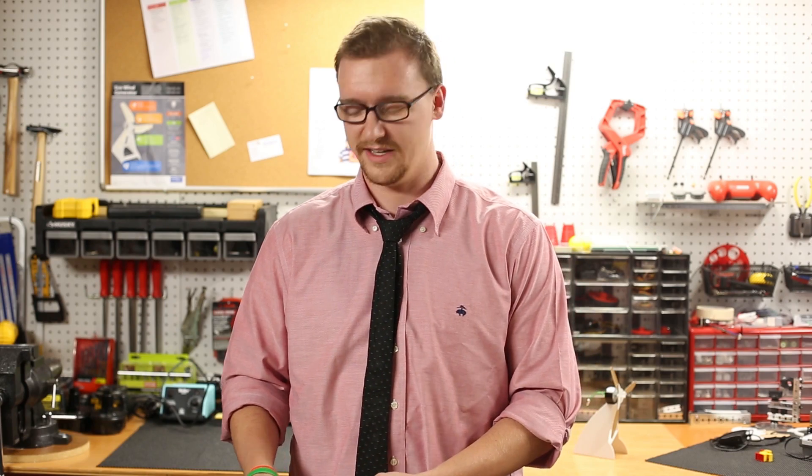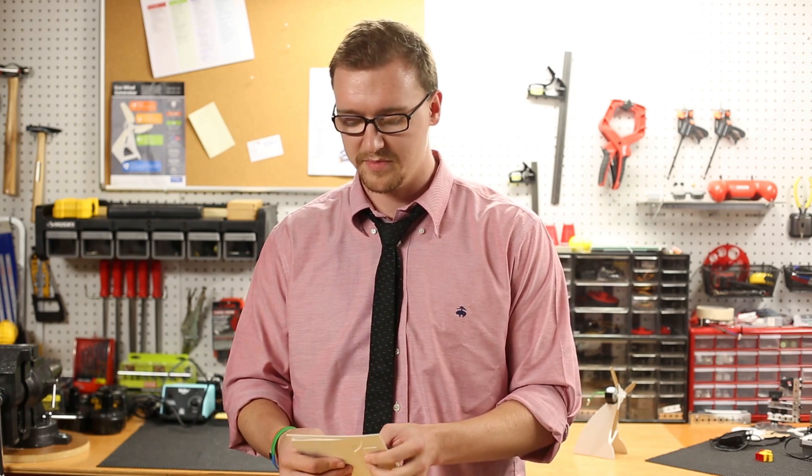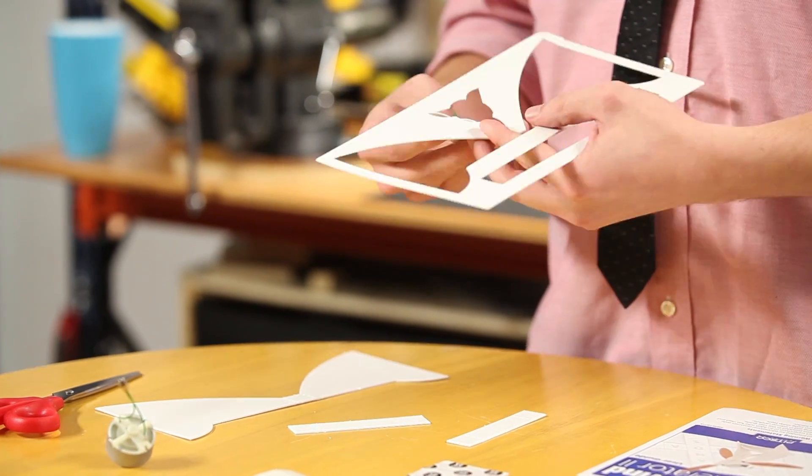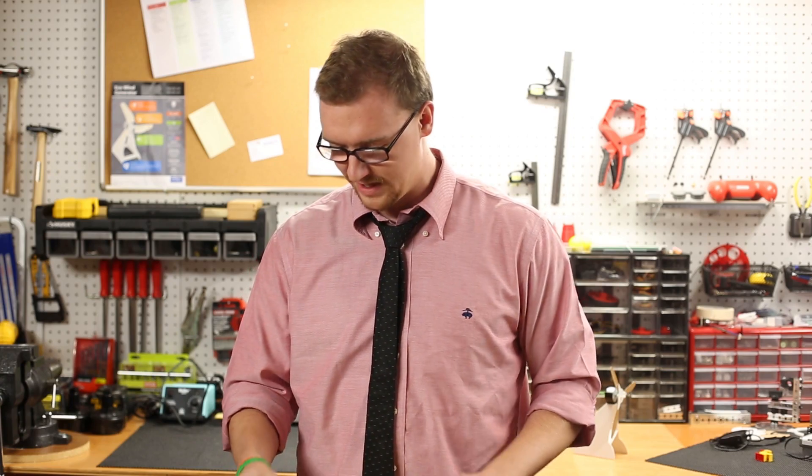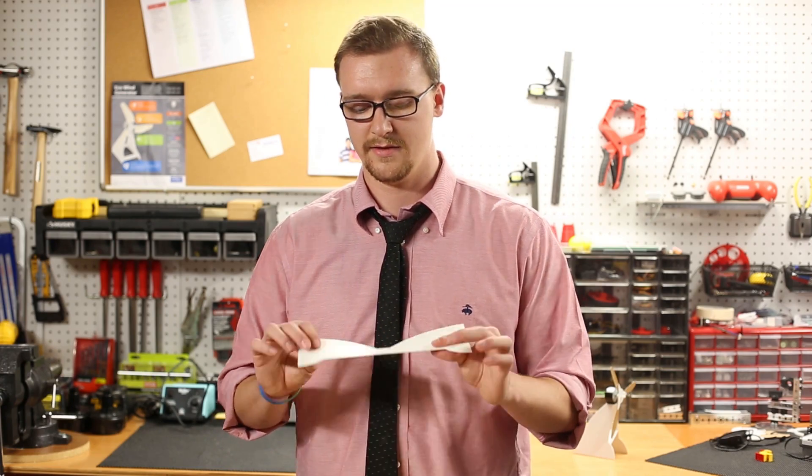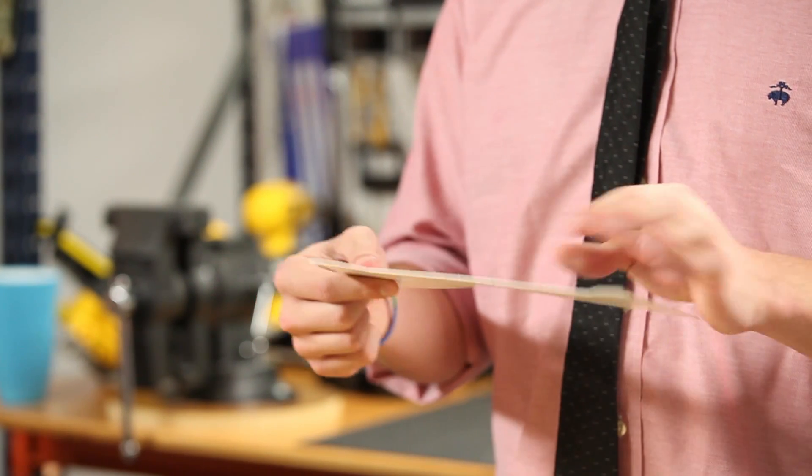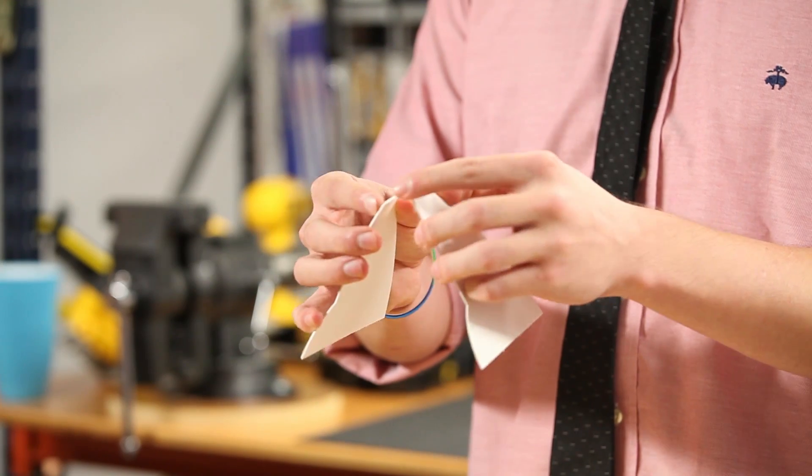First thing you want to do is you're going to want to pop out all the pieces on the die cut sheet, and then after that you're going to want to take the largest die cut sheet which is the base and bend it in the middle right here.